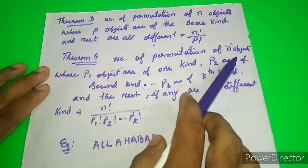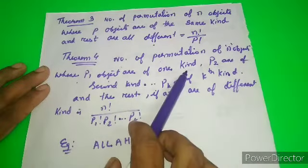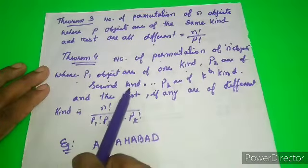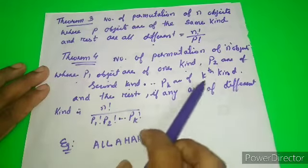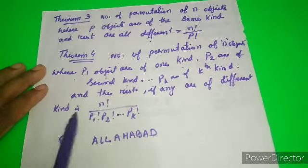Theorem 4: The number of permutations of n different objects where p1 objects are of one kind, p2 are of a second kind, continuing to pk, and the rest if any are of different kinds.